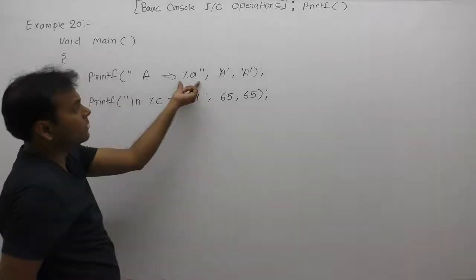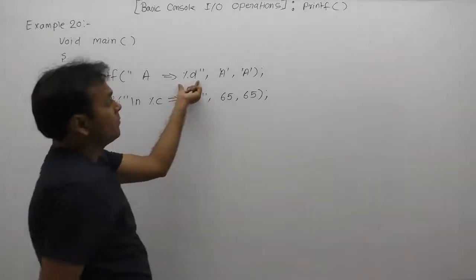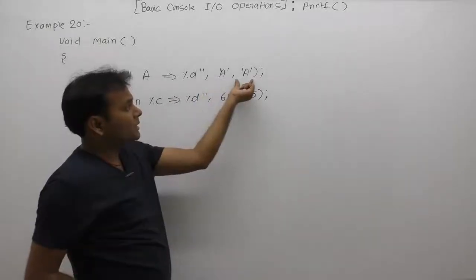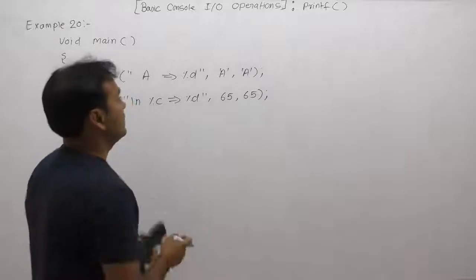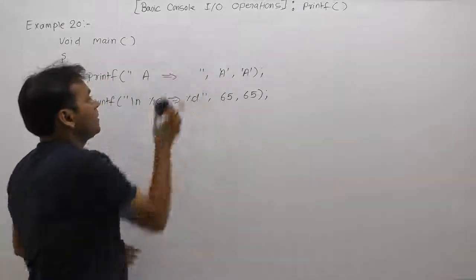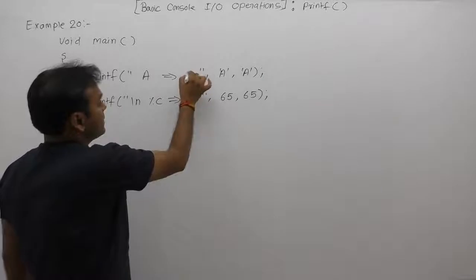Same as, in place of %d, %d will replace its ASCII value or ASCII value of character 'a'. Here, we are replacing this ASCII value of 'a'. ASCII value of 'a' is 65.